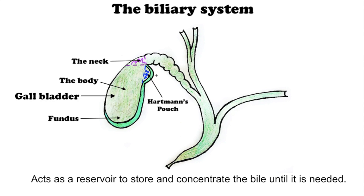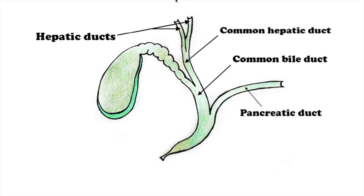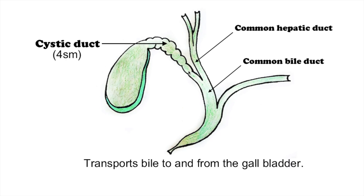Bile products from the liver flow into the hepatic duct, then into the common hepatic duct. The cystic duct runs backward, downward, and to the left from the neck of the gallbladder and joins the hepatic duct to form the common bile duct. The cystic duct transports bile to and from the gallbladder.